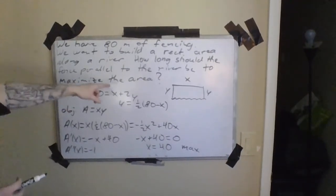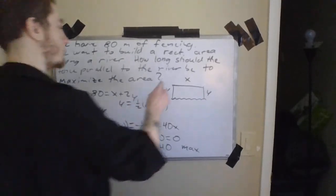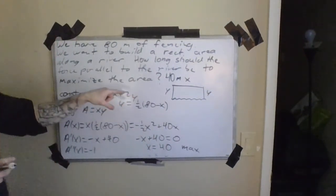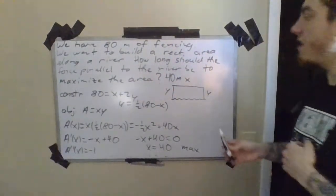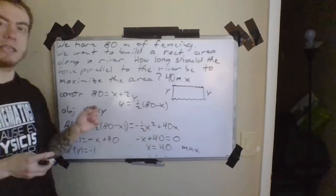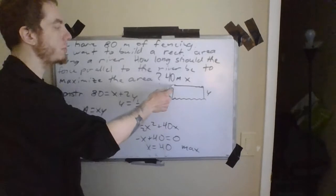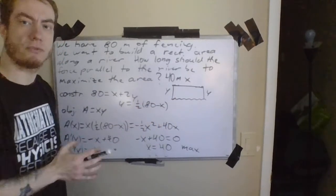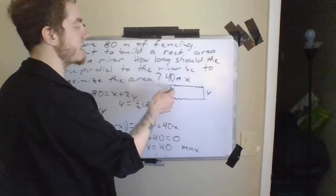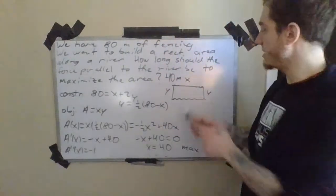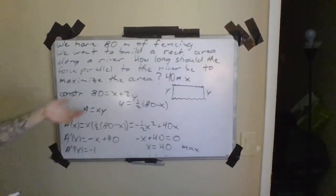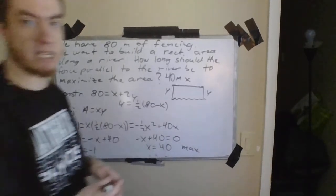So we want to make the side of the fence parallel to the river 40 meters long. That means y = (80 − 40)/2 = 20 meters, so the other two sides are each 20 meters. This is interesting: the side along the river is twice the length of the other two sides. The fence along the parallel side is doubly efficient — you get that length plus the river forms the opposite side for free. Calculus reveals that the optimal configuration has the parallel side exactly twice the perpendicular sides.